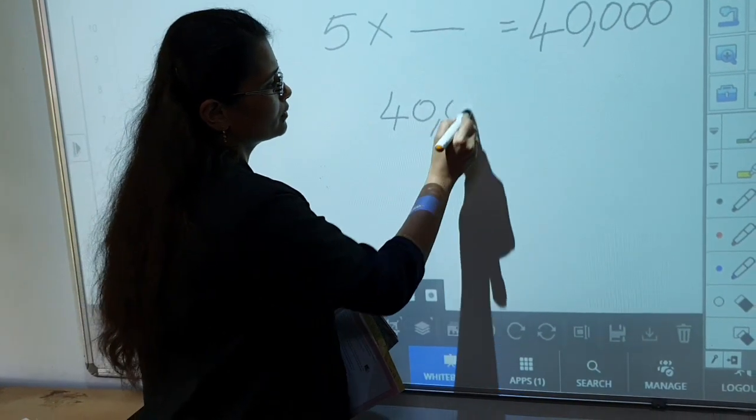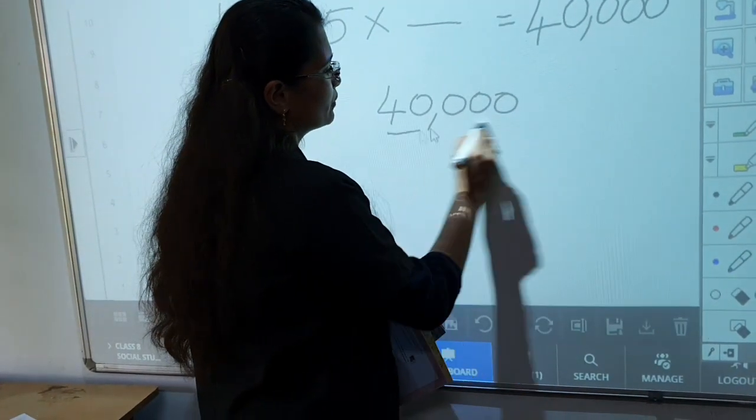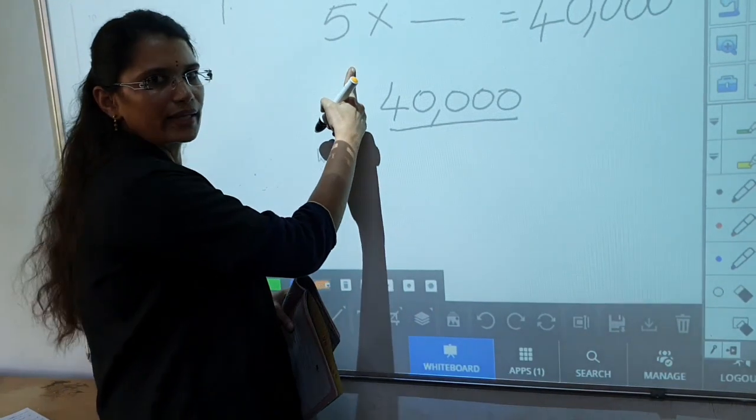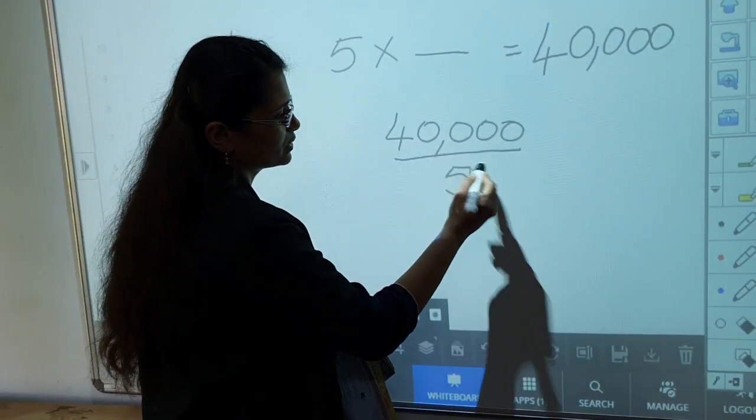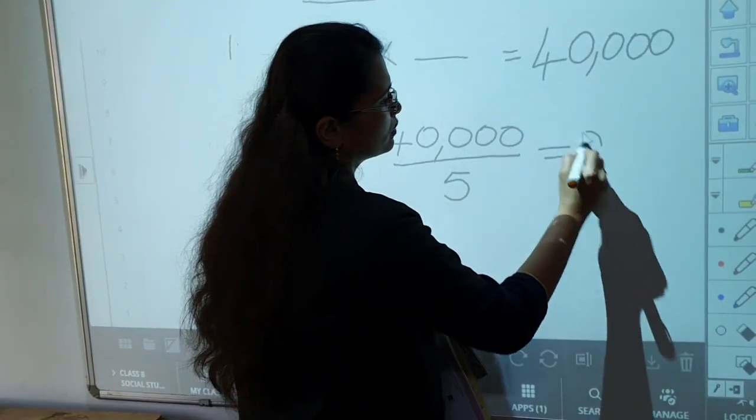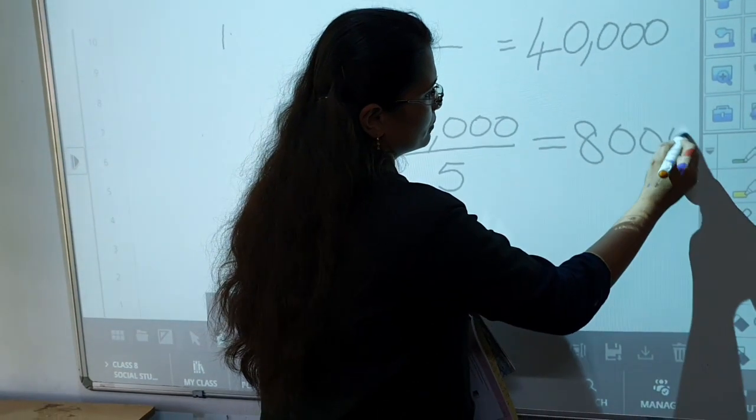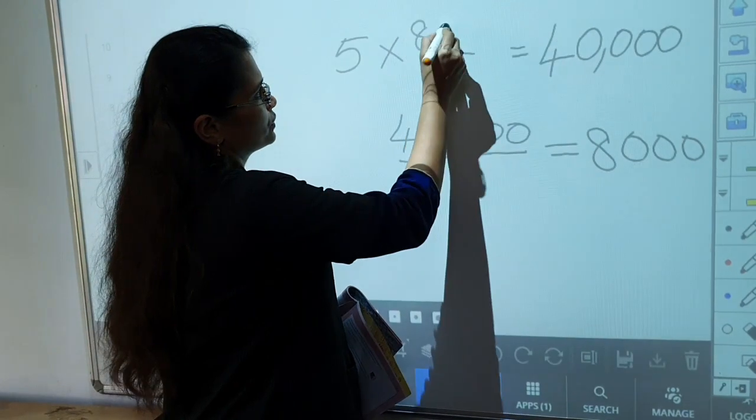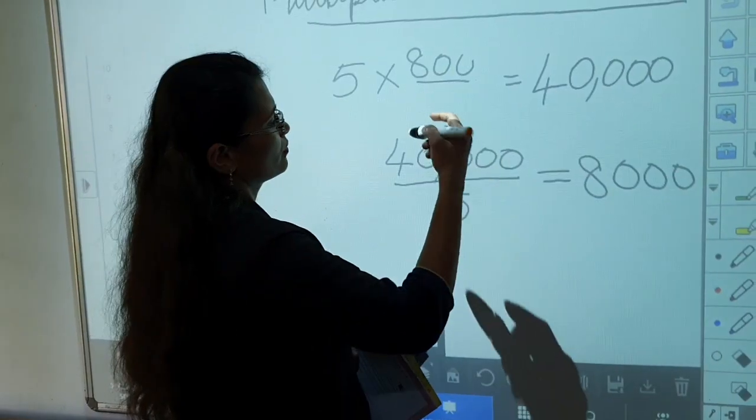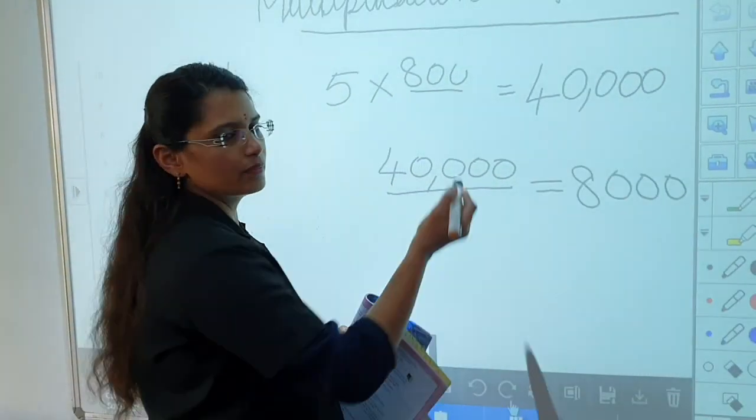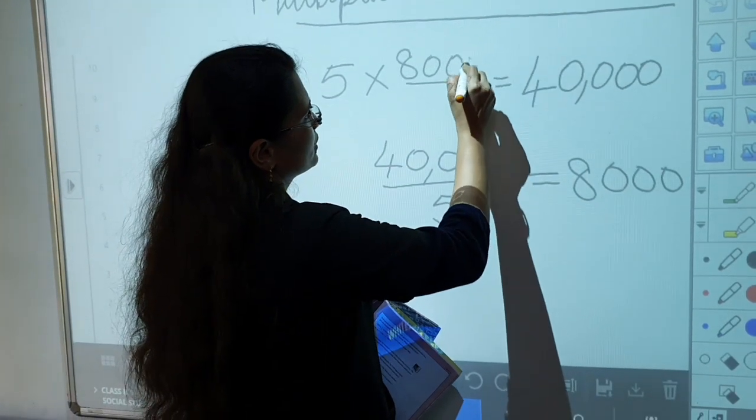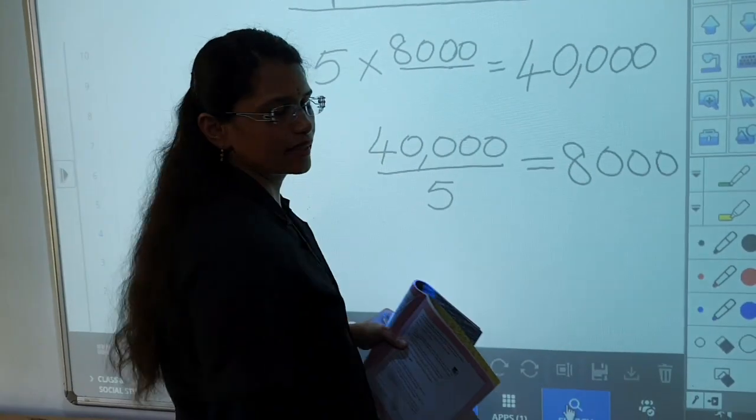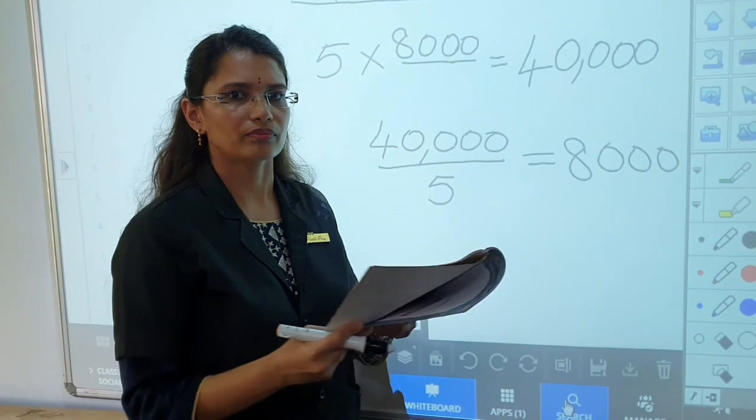40,000 divided by this 5. So 40,000 divided by 5 is equal to 8,000. What is the answer here? 8,000 that is the answer. 8,000 is the salary of peon.